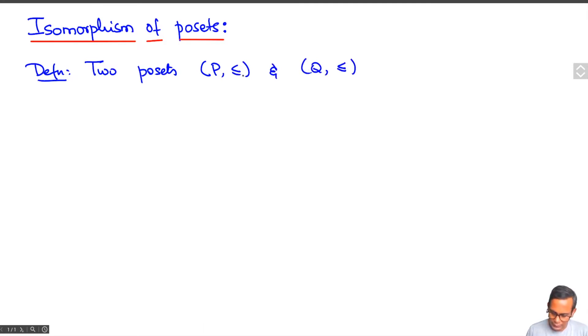But you should understand that these are actually different partial orders. They are said to be isomorphic if there exists a bijection.